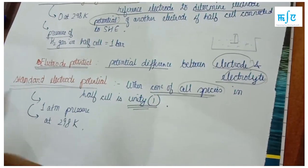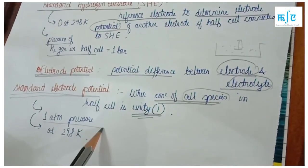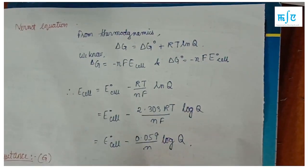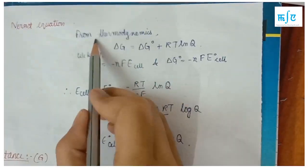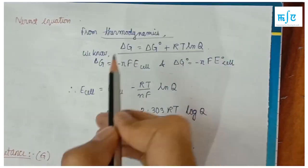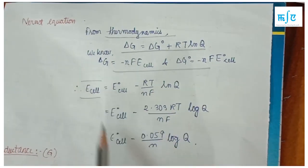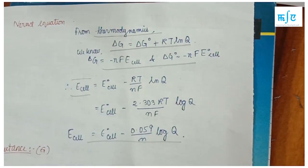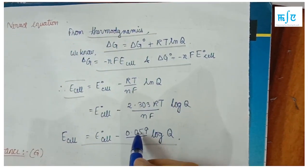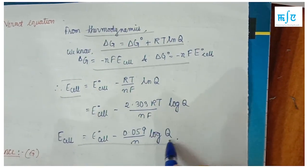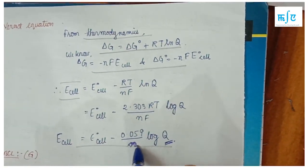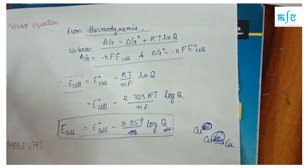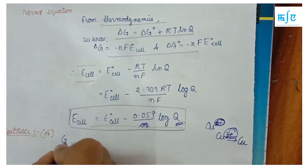Standard electrode potential is measured at atmospheric pressure and a temperature of 298 Kelvin. The Nernst equation is: E equals E0 minus 0.059 divided by n, times log Q. This relates to the thermodynamics of the electrochemical cell.